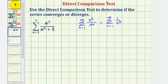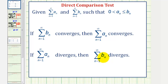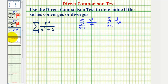For a quick review: because we're trying to show convergence using the direct comparison test, we're using the known converging series where the terms are given by b-sub-n. If we can show the terms of the given series given by a-sub-n are less than or equal to the terms of b-sub-n, the terms of the converging series, our series also converges. If we were trying to show divergence, we'd be comparing to a known diverging series given by the summation of a-sub-n, and if we show the terms of our series given by b-sub-n are greater than or equal to the terms of the diverging series, our series would also diverge.